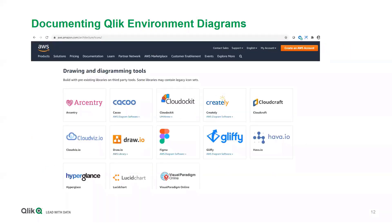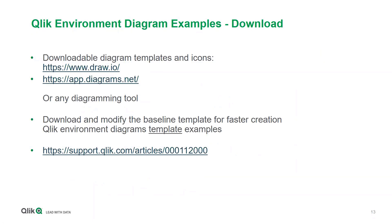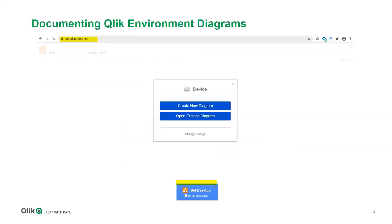If you go to the AWS website you can see there are icons you can download for different tools. The tool we recommend is draw.io — shown in the middle — and if you click on that you can download the icons. The tool can be downloaded from draw.io or app.diagrams.net; it's very easy to use. You could also use any diagramming tool your organization has, like Visio. We created a template with preset icons using draw.io that you can download from the article link.